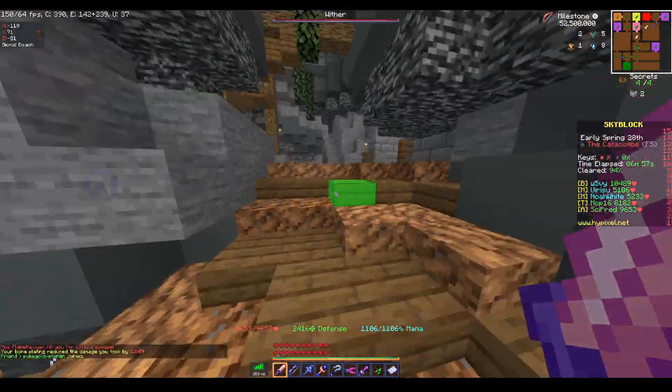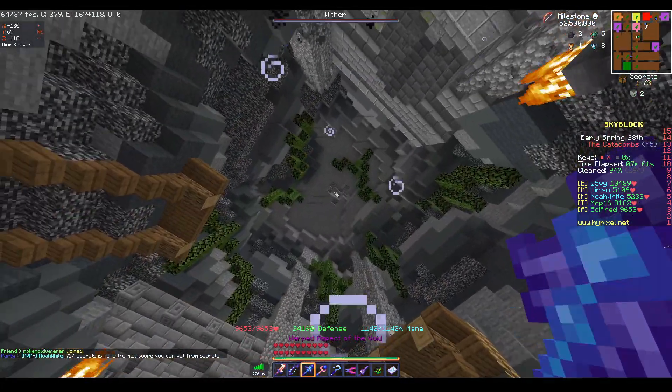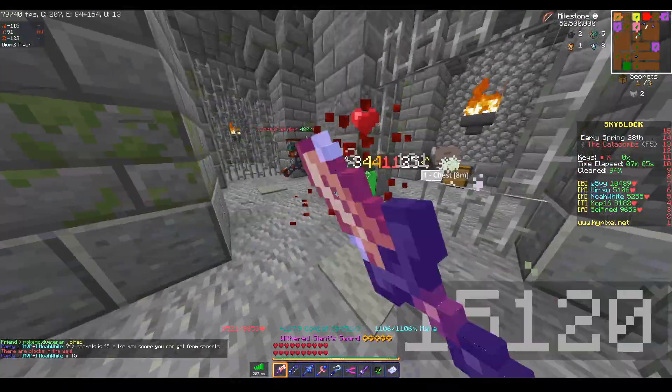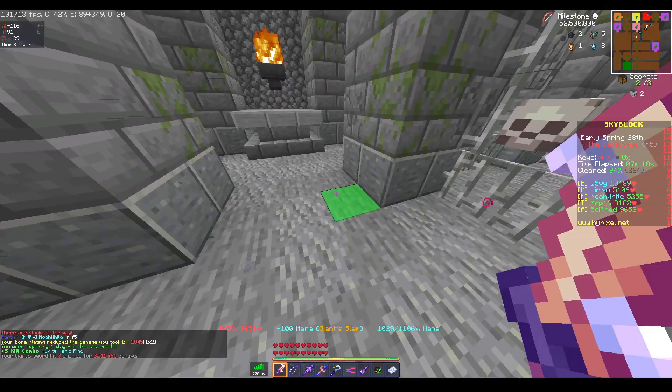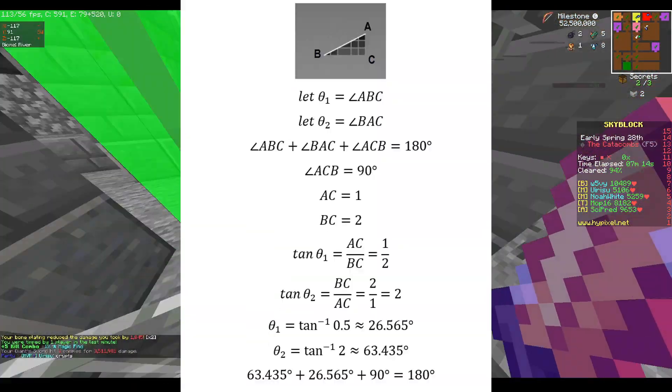For almost 4 years, I have thought that the angle of the slope was 22.5 degrees and that its complementary was 67.5 degrees. My puny little mind didn't even bother double-checking to see if it was correct, and only a few weeks back did I finally decide to check and prove myself wrong.